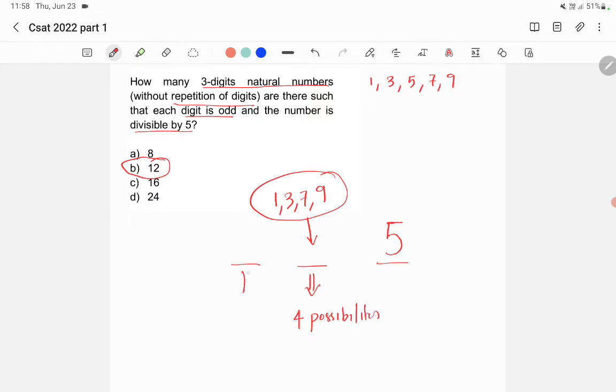Now in this digit, we have 3 possibilities. Why do we have 3 possibilities? Because one number we already used here, so we have 3 numbers balanced. So we have 3 possibilities here and 4 possibilities here.